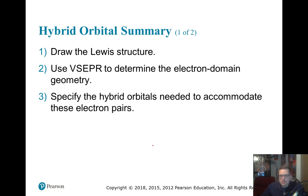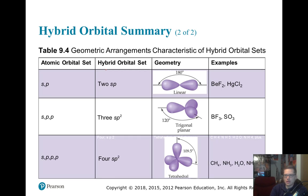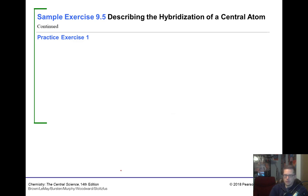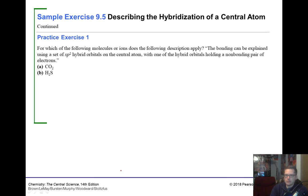Hybrid orbital summary: how do you establish hybridization? First, draw the Lewis structure, then determine the electron domains. Two electron domains gives sp; three gives sp2; four gives sp3. Let's do a couple of practice problems.